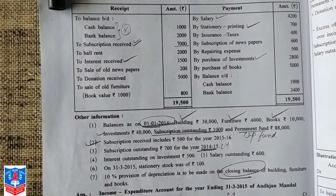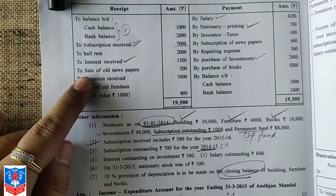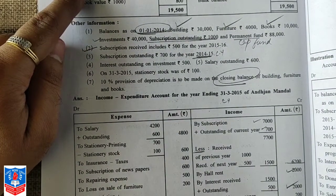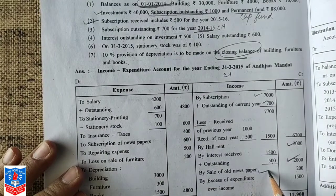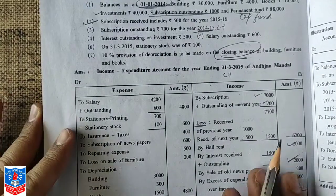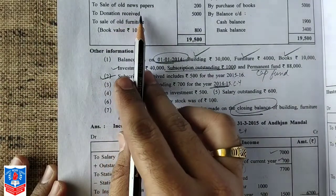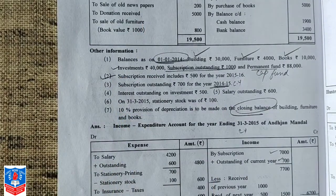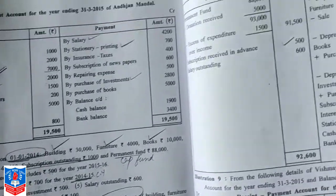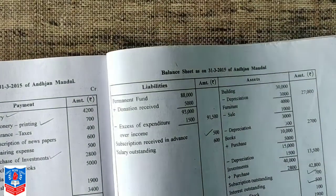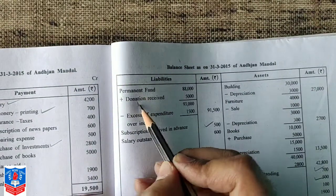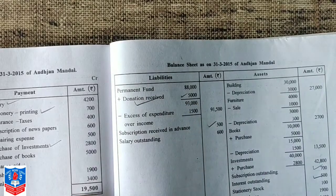Next, sale of old newspapers — income is generated here, so show 200 on the income side. Next is donation received — whenever donation is received, it is to be treated as capital in nature. So you will add it to the capital fund, the permanent fund.